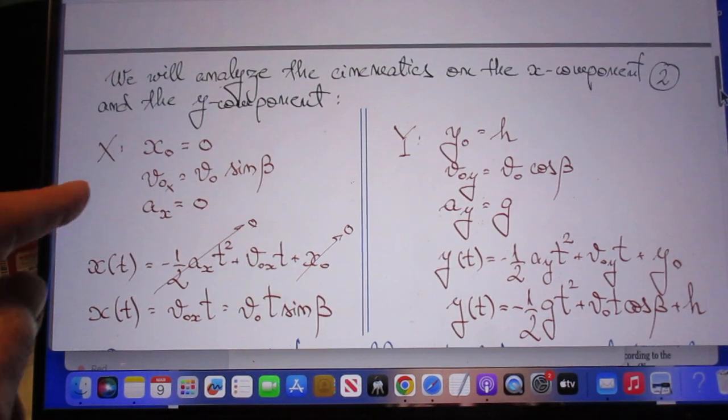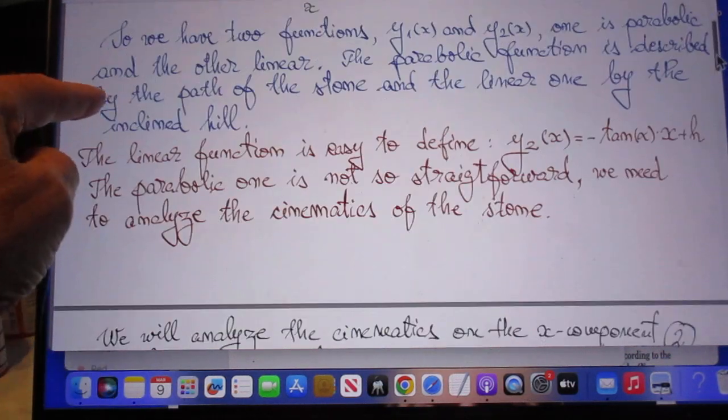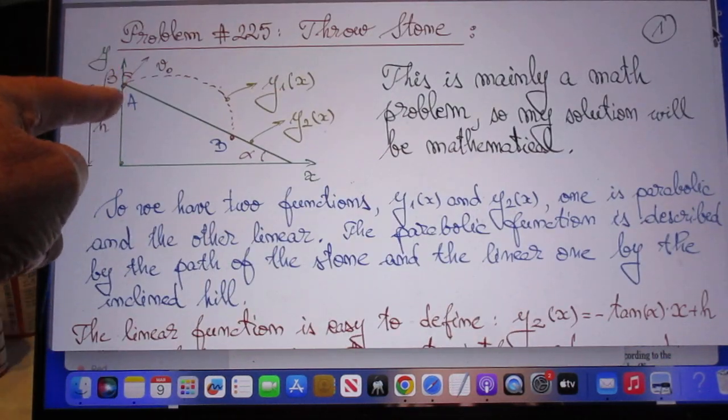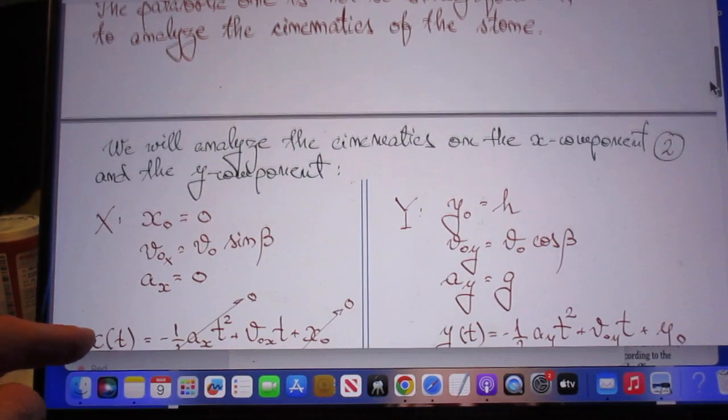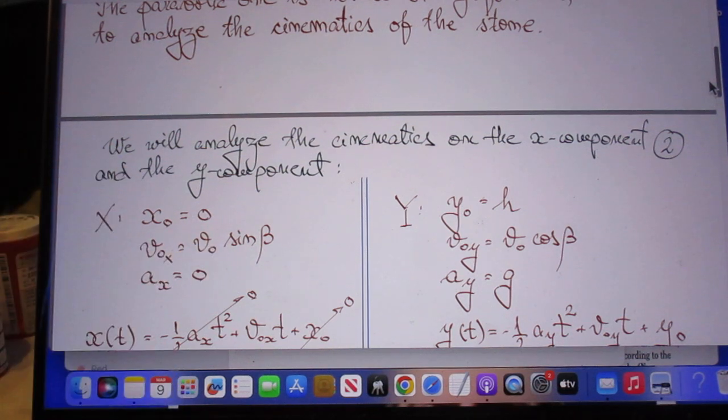For the x direction: x_0 is 0, v_0x is v_0 sine beta, and there is no acceleration at all, so a in the x direction is 0.